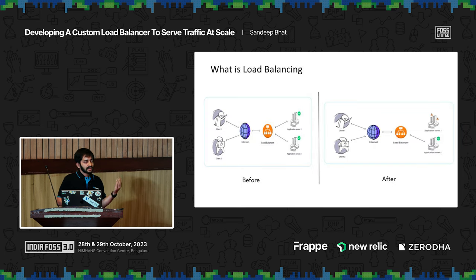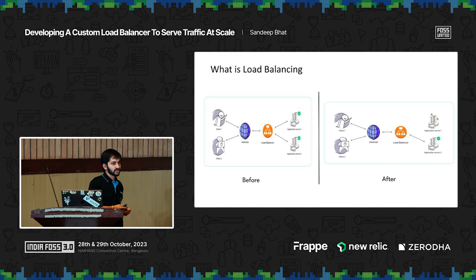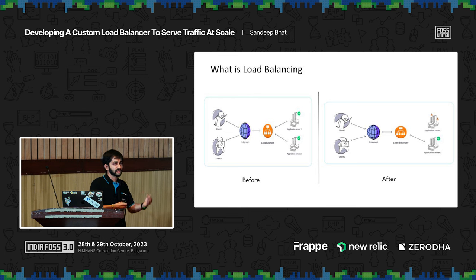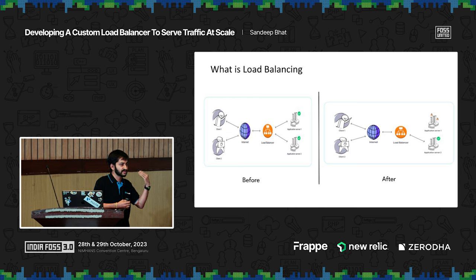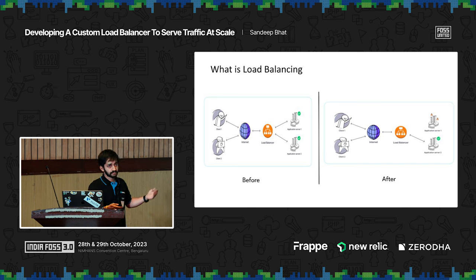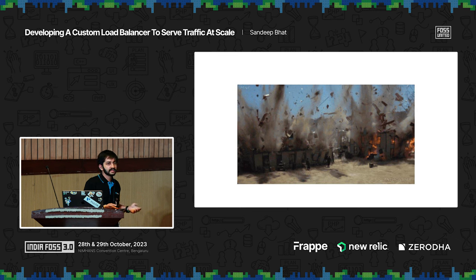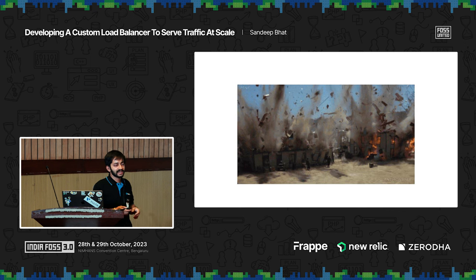In simple terms, if you have application server one and application server two, both healthy, the load balancer will forward all the traffic to both VMs in a round robin fashion. Now, assuming one of the servers goes down for various reasons, it would stop forwarding traffic there and only forward all traffic to application server two. If even application server two were to go down, well, in that case you really need to solve your issues.